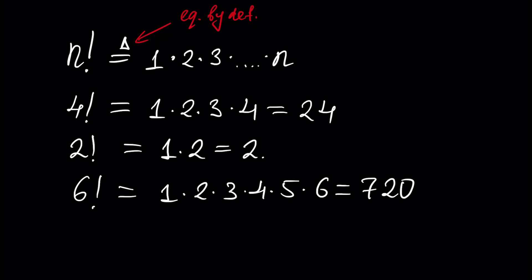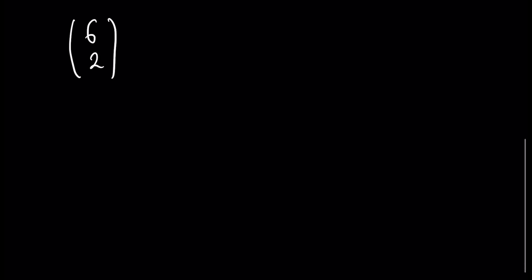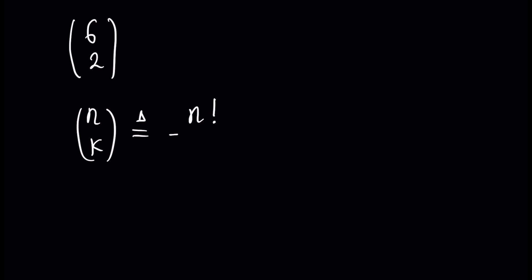Next we have to define n choose k. This is called 'six choose two' for example. By definition, n choose k equals n factorial divided by k factorial times (n minus k) factorial. This is the definition of n choose k.